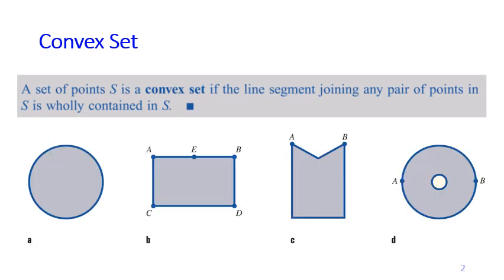Let's use four examples to make it clear. For the first one, a circle: if you use any two points inside the circle to draw a line, the line is always wholly contained inside the circle, so this is a convex set. For the second one, a rectangle: if you pick any two points inside the rectangle and draw a line, the line will always be contained in the rectangle. So it is also a convex set.